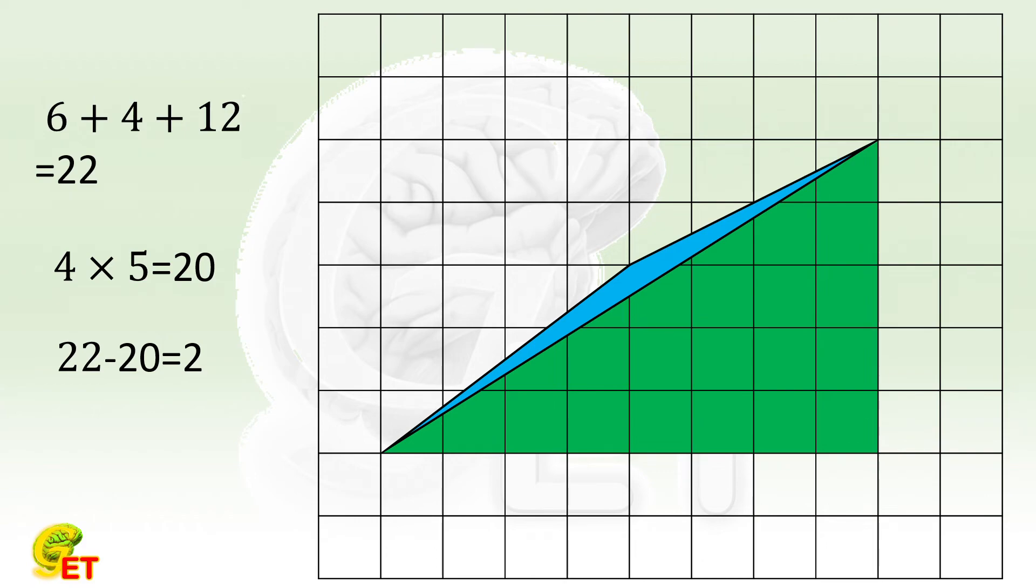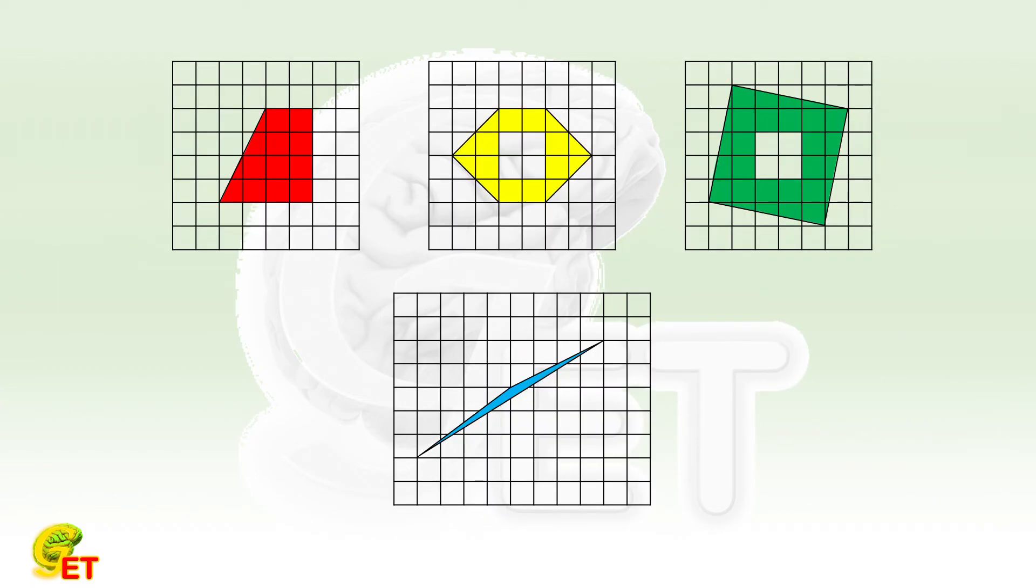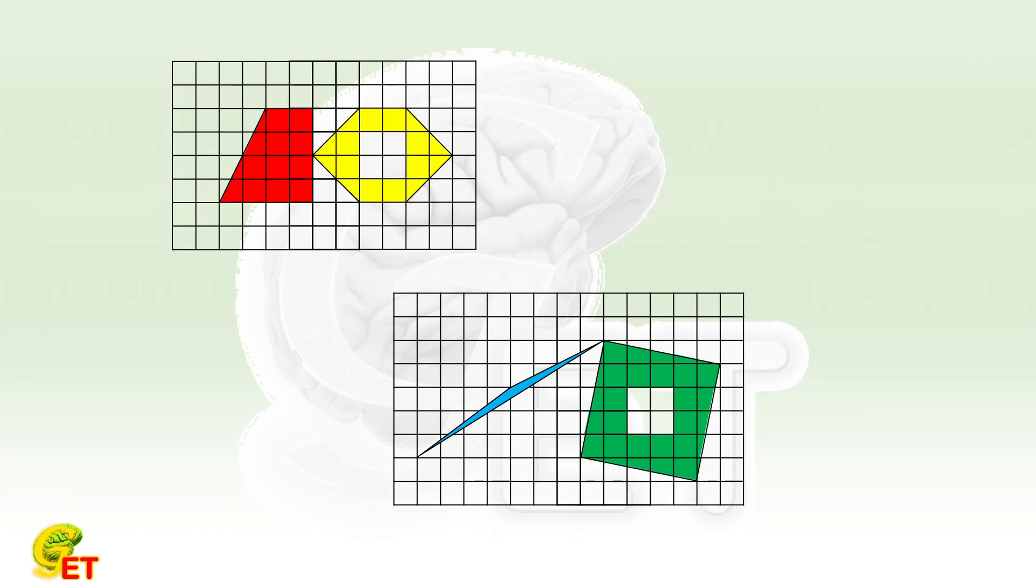Now let's summarize them. Their areas are twelve, twelve, twenty-two, and two respectively. As a result, the shadow parts of the two patterns have exactly the same area. Thank you for watching and see you next time.